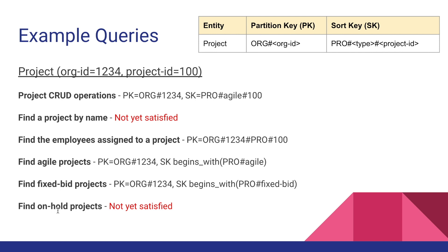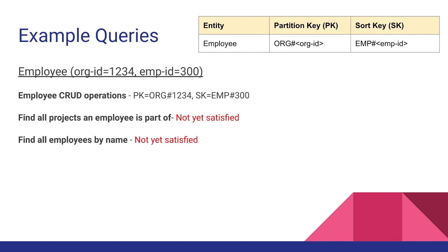We still can't find a project by name or find all projects. For finding agile projects, the primary key is org hash 1234 and we use the begins_with operator: sort key begins with pro hash agile. We don't specify the project ID, so it returns all items belonging to organization 1234 whose sort key begins with pro hash agile. Similarly, to find all fixed bid projects we use begins_with with pro hash fixed_bid.